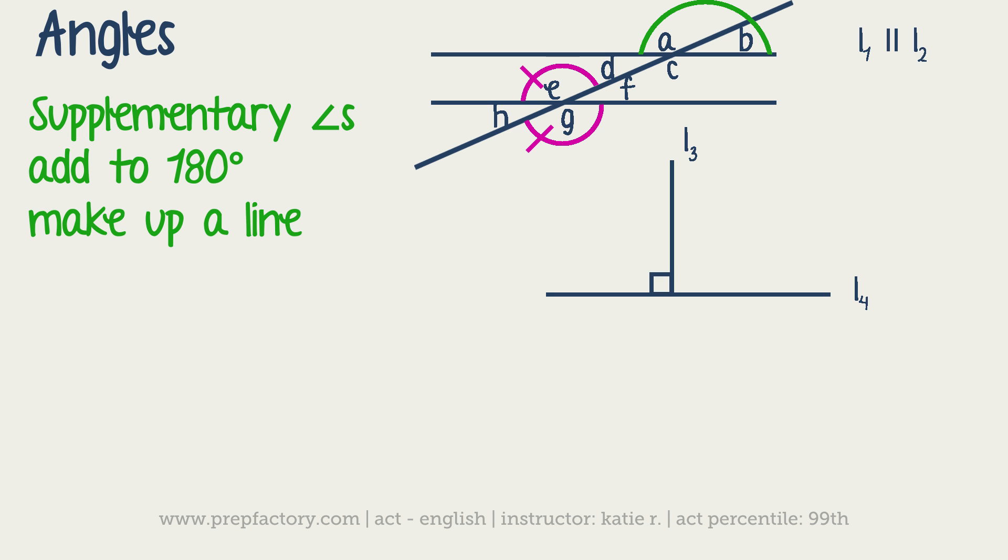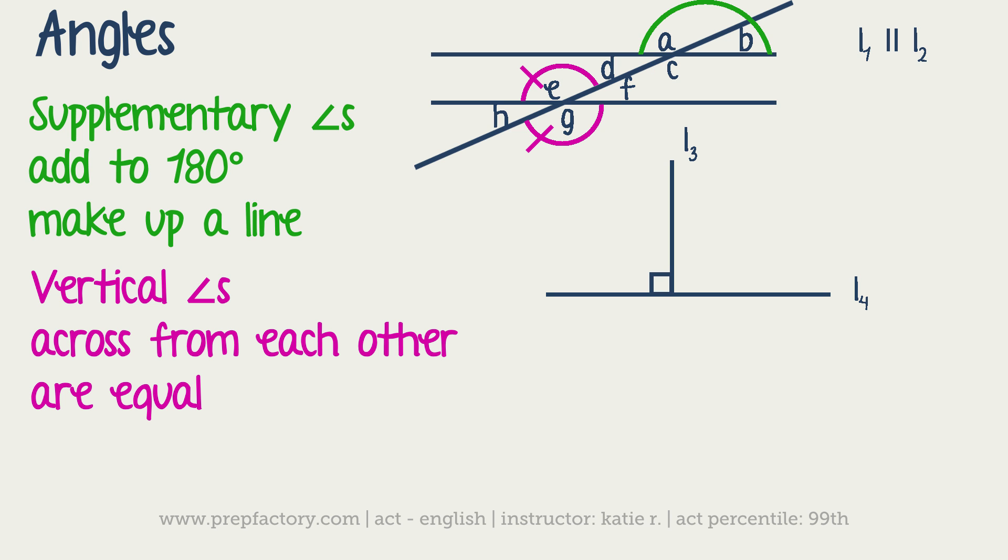The next thing to know is that when you have two parallel lines cut by a transversal, which is just describing what the first figure is, so L1 and L2 are parallel. A transversal is any line that cuts through another set of lines, so in this case let's say this is L6, that's our transversal.